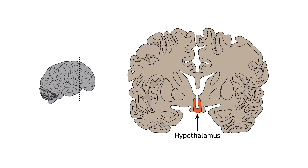The hypothalamus plays a critical role in stress, activating both the autonomic and hormonal responses. It is a region right above the brain stem on either side of the third ventricle. The hypothalamus manages hormone release in the body and maintains homeostasis, and is critical for numerous functions including hunger, thirst, and temperature control.